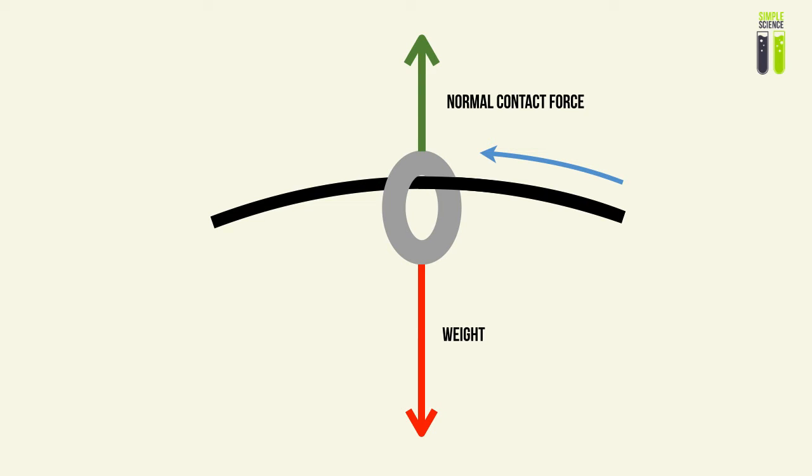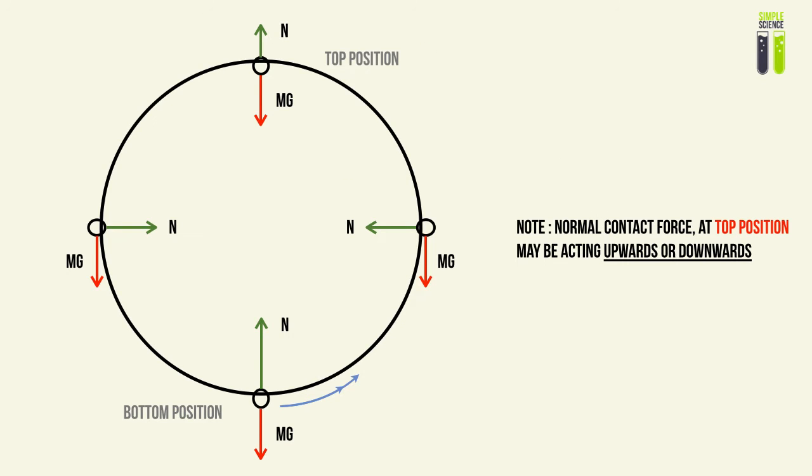When you look at this free body diagram, you can see that there are two forces acting on the bead: one is the weight force due to the earth, and the other is the normal contact force of the wire acting on the bead. If we look at the basic positions of this bead moving in circular motion, we can represent the forces acting on the bead.